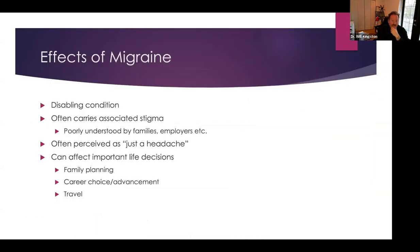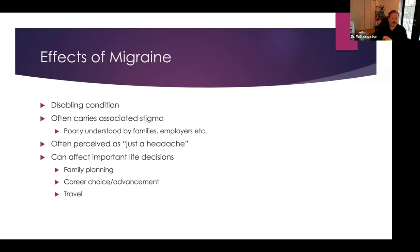Despite knowing more and more about migraine, it still carries an associated stigma. It's often poorly understood by people's families, people's employers, and is often perceived as being just a headache, despite the fact that we know migraine is a disabling neurological disease. It can also impact important life decisions. If someone is dealing with really disabling or frequent migraine, they may put off family planning, choose not to go for a promotion, limit travel, or realize that whenever they go to a new time zone they get a terrible attack and can't enjoy their vacation. If people are putting off things that make them happy, that is another invisible symptom caused by migraine.